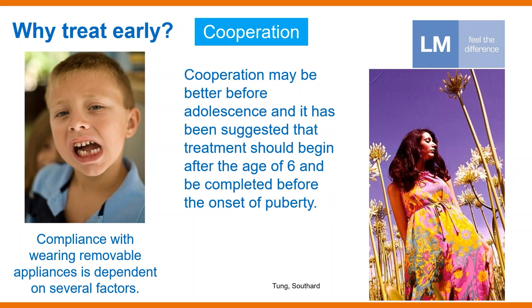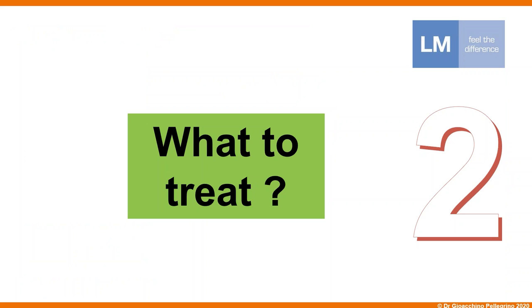It is possible to manage cooperation in a good way during adolescence, but this is a very complicated period — and this is a common experience for all of us — particularly if we want to use an individual activator like a Fränkel appliance, a twin block, or a Sander appliance in a girl of about 12 years of age. At this point, it is clear that we have several reasons to treat early, because treating early we can manage the eruption of the teeth.